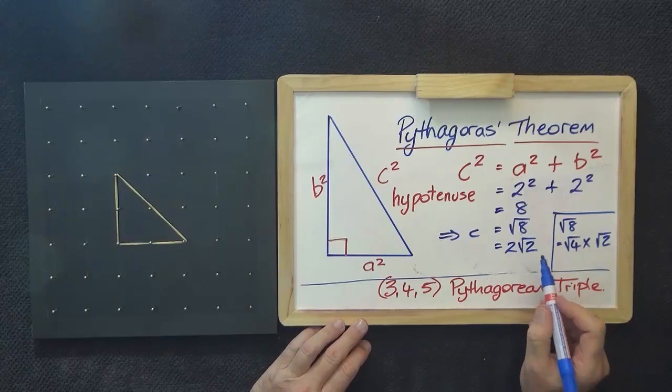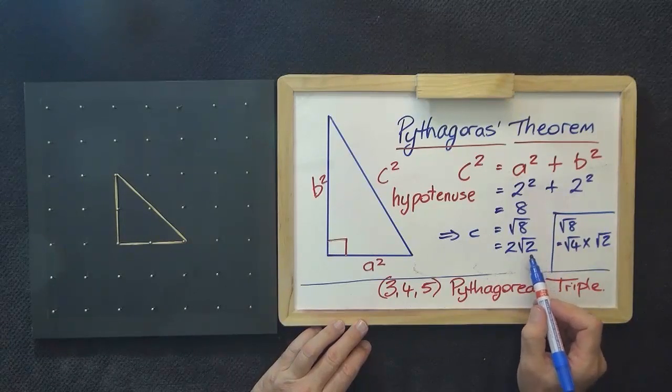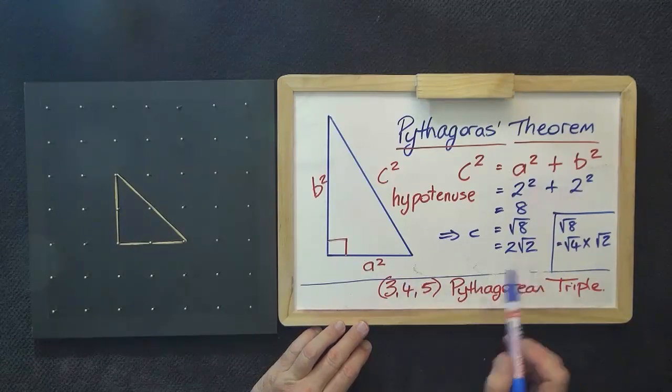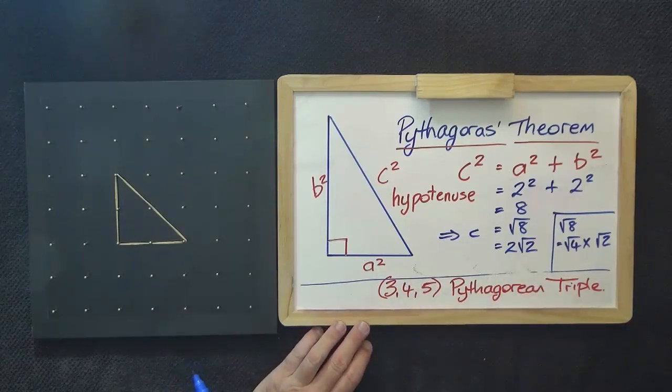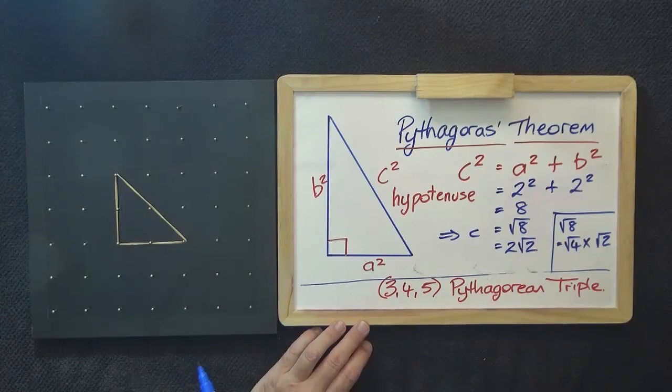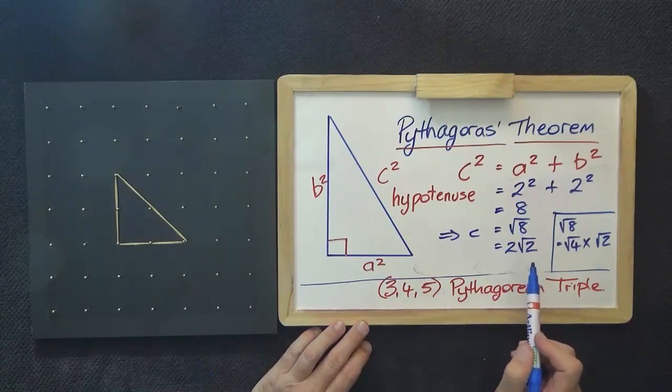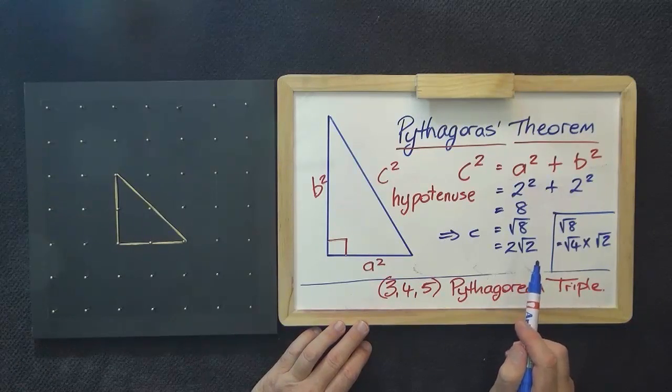Now, it will be interesting for you to compare this answer, 2 root 2, where the side of the isosceles triangle is 2, to the last answer, where the answer was just root 2 and the side was 1.